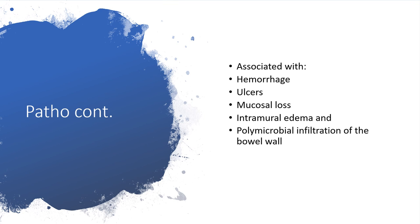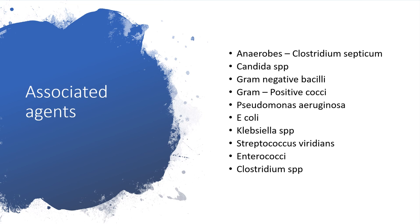Because the gastrointestinal tract, particularly the large intestine, is well endowed with a lot of bacteria, polymicrobial infiltration of the bowel wall will occur. Many agents — bacteria — will get into the system: anaerobes, Clostridium septicum, Candida species, gram-negative bacilli, gram-positive cocci, Pseudomonas aeruginosa, E. coli, Klebsiella species, Streptococcus viridans, Enterococci, and Clostridium species — all will gain entry through the damage caused.